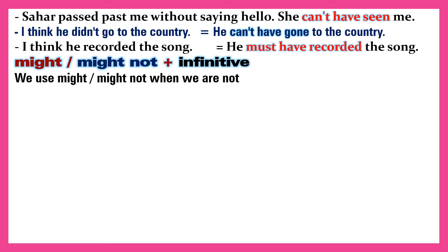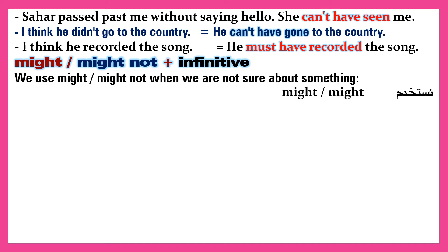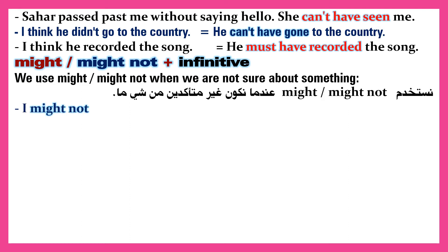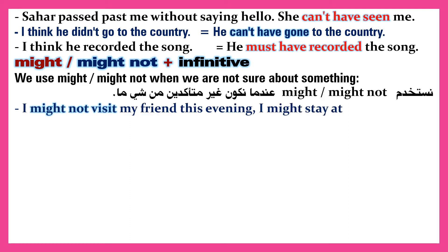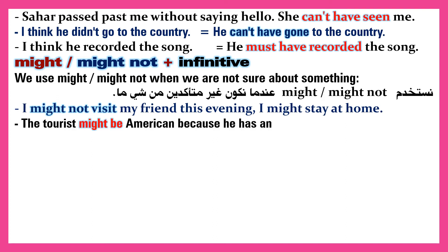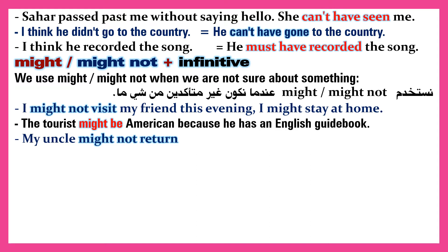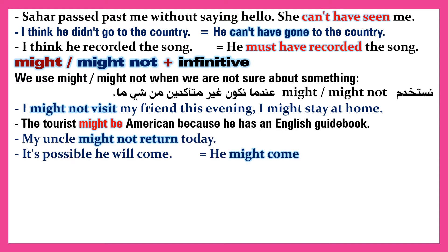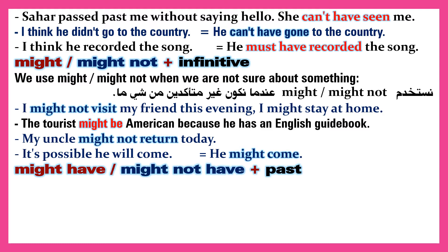Might, might not and infinitive. We use 'might' and 'might not' when we are not sure about something. I might not visit my friend this evening — I might stay at home. The tourist might be American because he has an English guidebook. My uncle might not return today. 'It's possible he will come' equals 'he might come.'